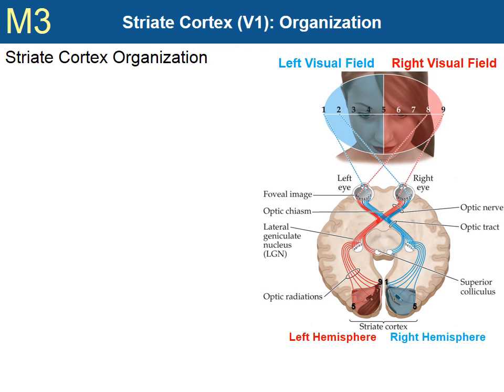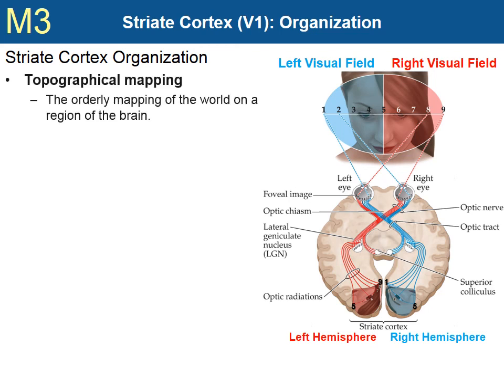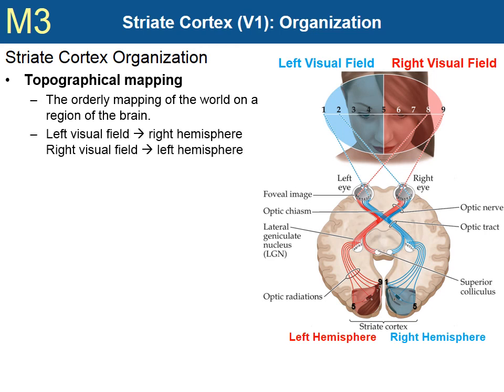The axons of neurons in the LGN make up the optic radiation, which extends to the striate cortex, or primary visual cortex. It, too, has important characteristics. First, like the LGN, the striate cortex is topographically mapped to the visual field. That is, adjacent areas of the striate cortex respond to adjacent areas of the world that the eyes are viewing. Also, like the LGN, the right hemisphere responds to stimuli in the left visual field, and the left hemisphere responds to stimuli in the right visual field.